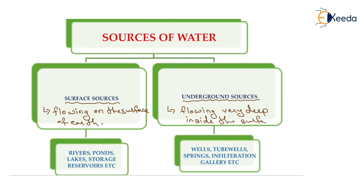The examples of underground sources are wells, tube wells, springs, and infiltration galleries. Now all of you are aware of what is a river, pond, lake, storage reservoir or dam, and what are wells and tube wells. But does anyone have an idea of what is a spring or what is an infiltration gallery?